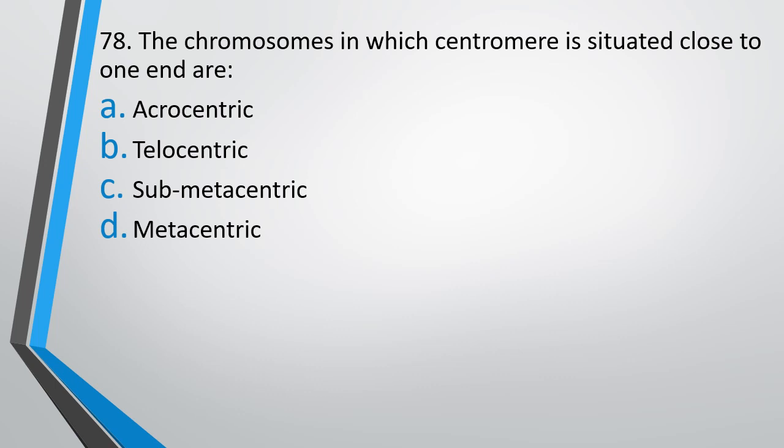Question number 78. Chromosomes in which the centromere is situated close to one end are called: acrocentric, telocentric, submetacentric, or metacentric. Correct answer is option A — acrocentric chromosomes.